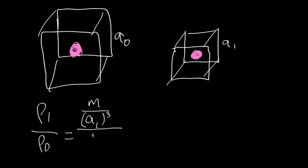Right now, the mass is the same in the box, so m is the same. But the volume of the box is a little different. It's a0 cubed. So that means that the density goes as a0 over a1 cubed.